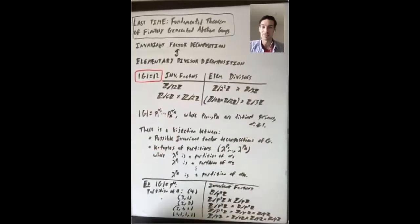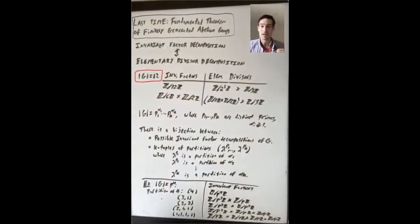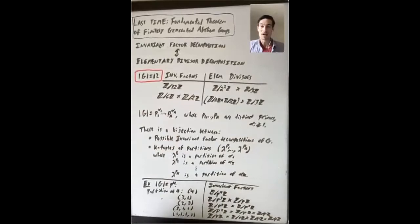What are the possible invariant factors? We want to write this group as Z mod n1Z cross Z mod n2Z cross Z mod n3Z and so on, where each nj is at least two and n2 divides n1 and n3 divides n2 and so on. So for every prime p dividing the order of the group, p has to divide n1 at least as many times as p divides n2, and so on. So every prime dividing the order of the group has to divide n1.